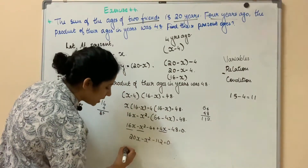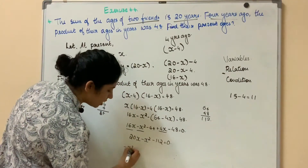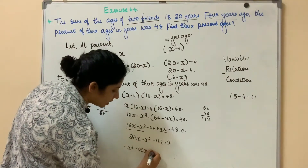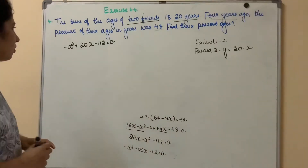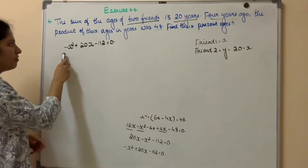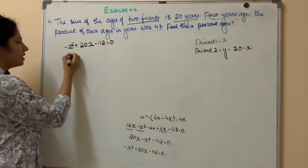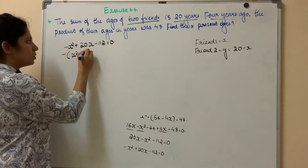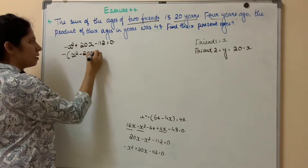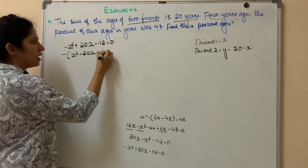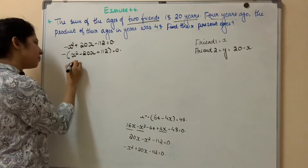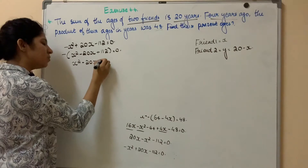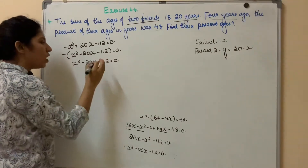Rearranging in standard form: minus x² plus 20x minus 112 equals 0. Since the x² coefficient is negative, multiply through by negative one. This gives x² minus 20x plus 112 equals 0. The quadratic equation is now formed.